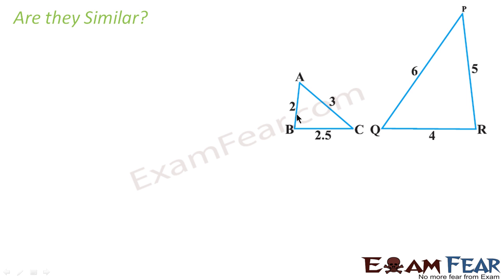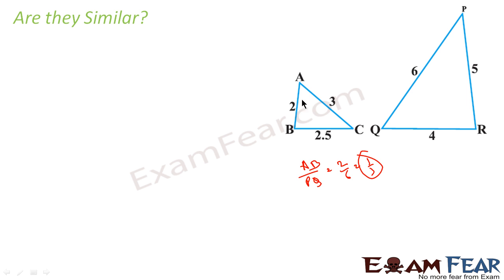In this next case, the sides are 2, 3, 2.5 and 6, 5, 4. If I try to match AB with PQ, the ratio is 2 by 6, which is 1 by 3. So AC by PR should also be 1 by 3 for the triangles to be similar. But AC by PR is 3 by 5, which is not 1 by 3. So with this matching, they do not appear similar.